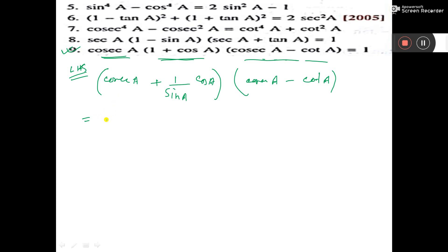Now see, cosec A plus cos by sine is cot A. Again, cosec A minus cot A.